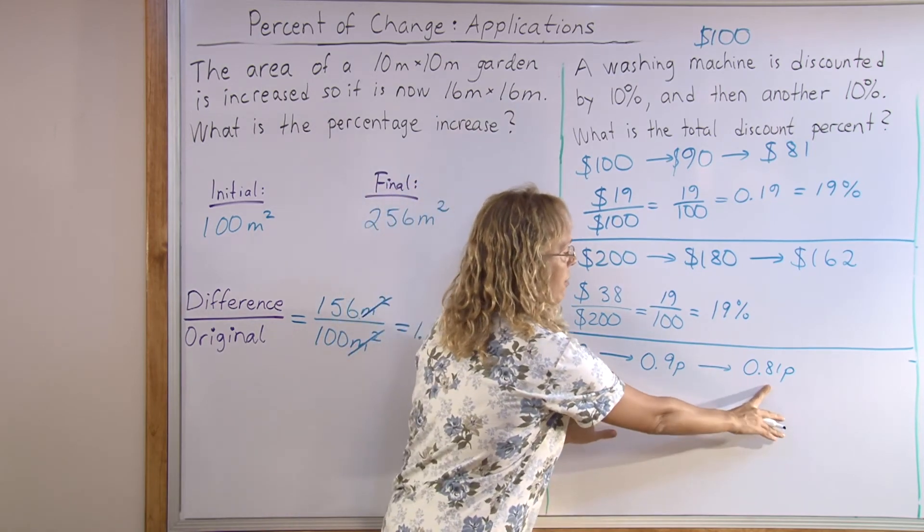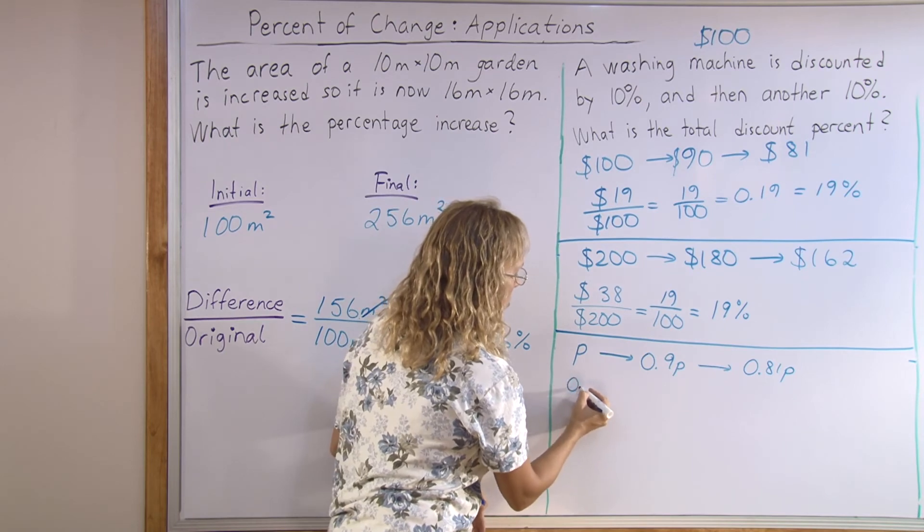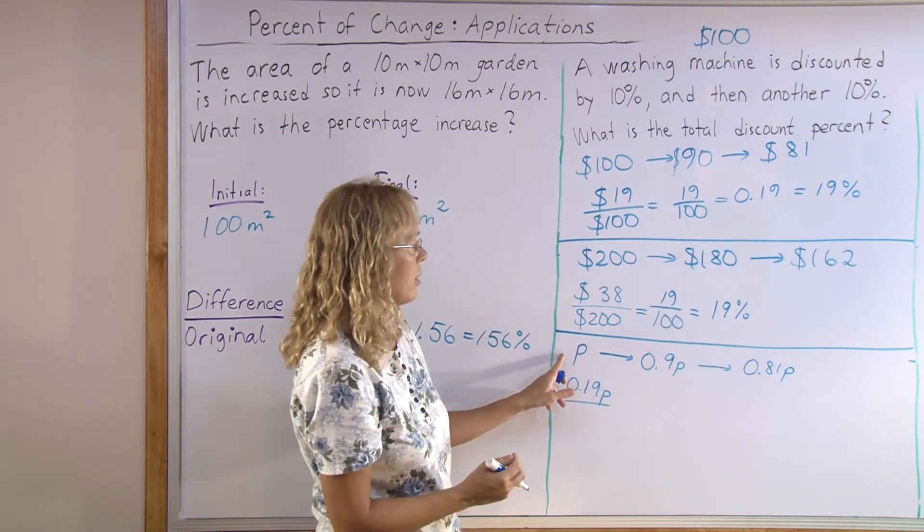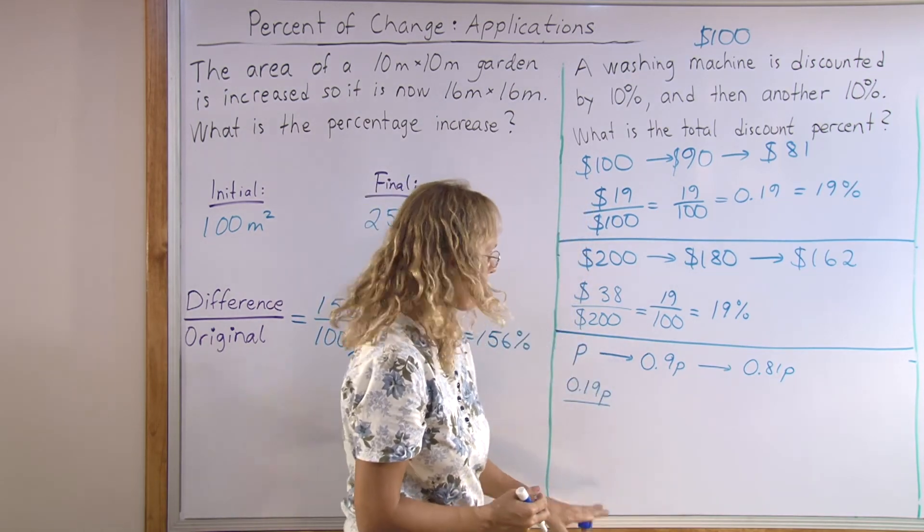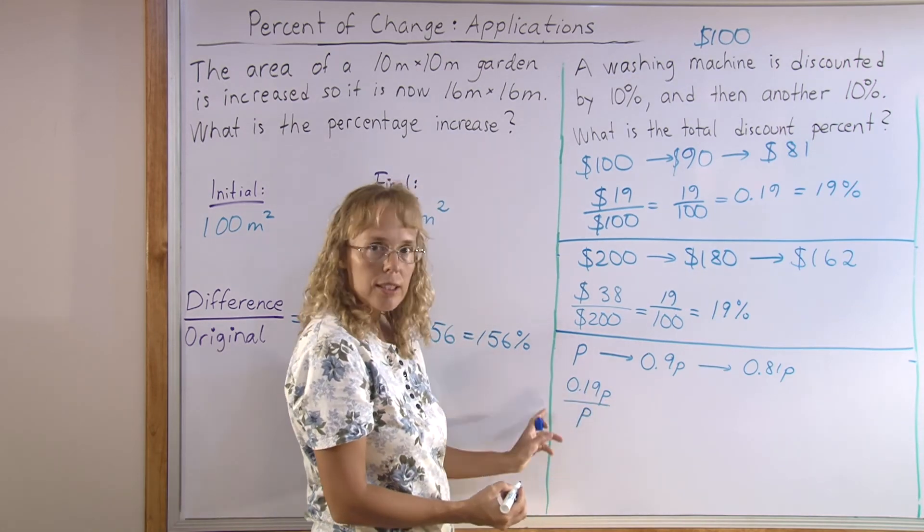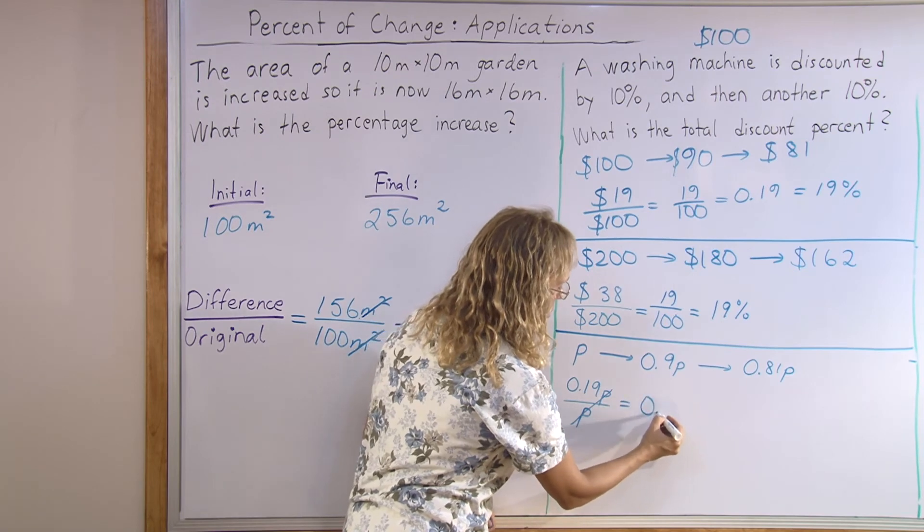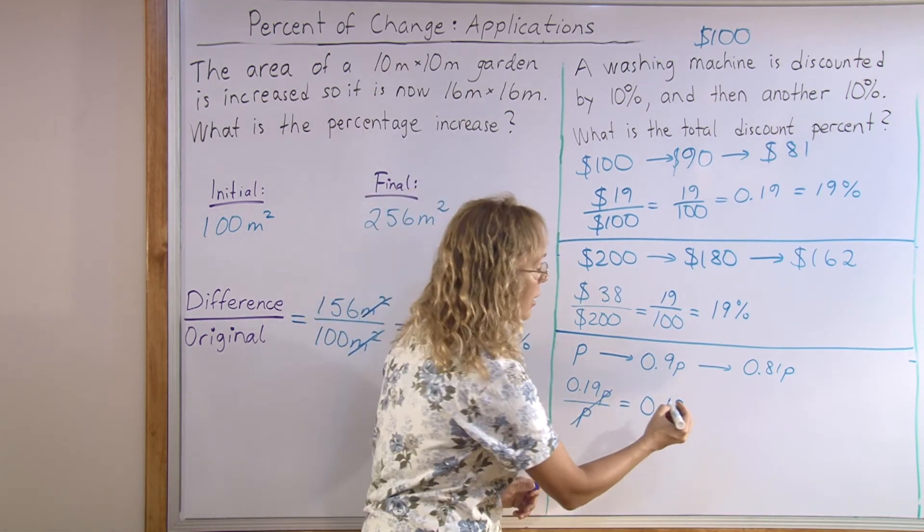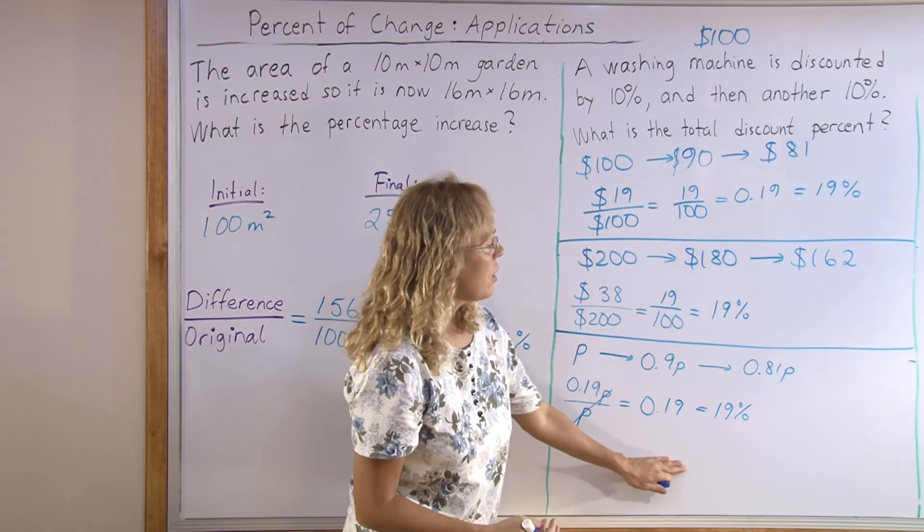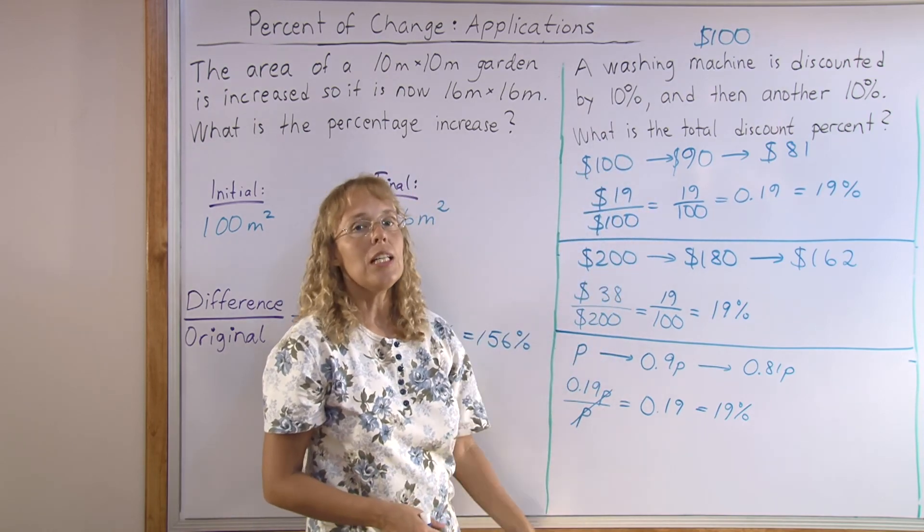And now we take the difference between these two, which means you subtract, and you would get 0.19P. This is 1P minus 0.81P. And then divide by the original price, which is again P. Now here in this expression, the P's will cancel. We will get 0.19, just a plain number, and it is 19%. So, the discount percent does not depend on what the price of the washing machine actually is.